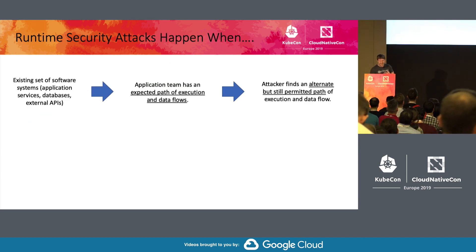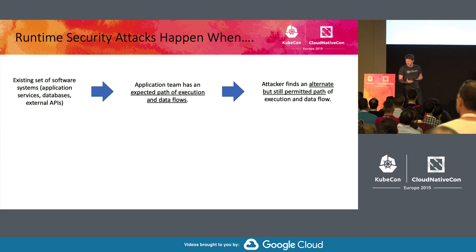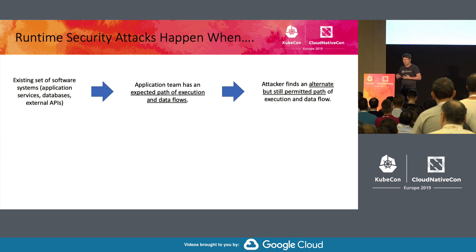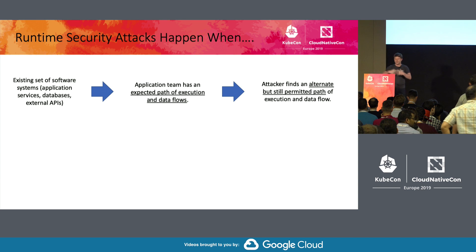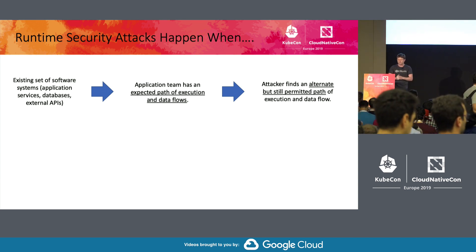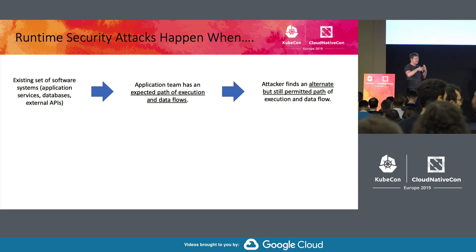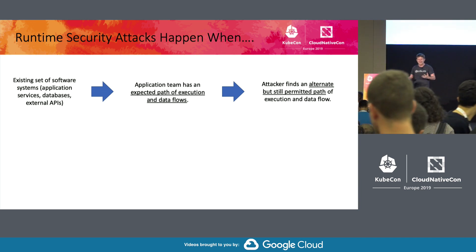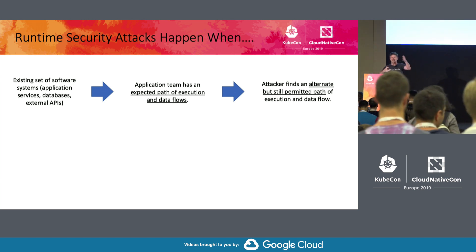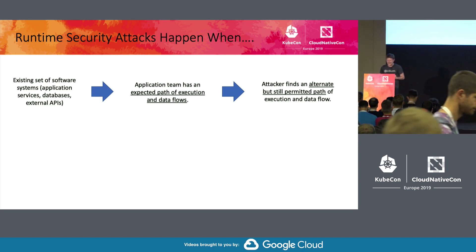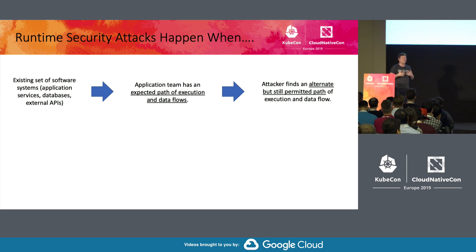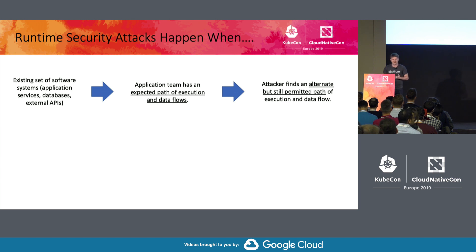If we're talking about security, we have to talk about what type we're focusing on — specifically runtime security attacks. A runtime security attack is something that happens as the application is running. You have a set of services, some data stores, maybe some external APIs. The application team has some idea of how the code execution and data flow is supposed to work when things are well-behaved. We all know that attacks happen when a malicious actor finds an alternative execution path or data flow that's different than what the application team intended, but is still permitted by the infrastructure.